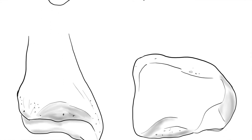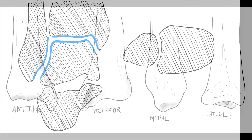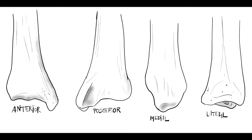The bones that participate in the ankle are the tibia, the fibula, and the talus. The distal end of the tibia has a quadrangular section in the axial plane. Thus, it has anterior, posterior, lateral, medial, and distal surfaces. At the lateral surface, the incisura fibularis is the area of contact with the fibula.